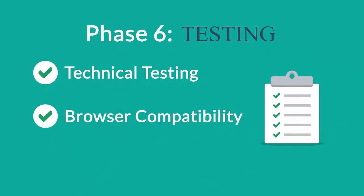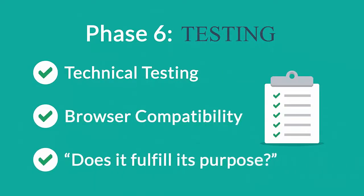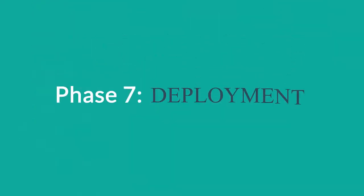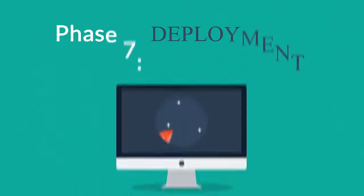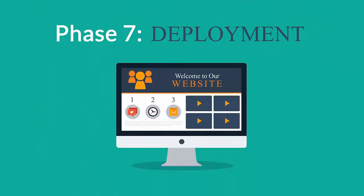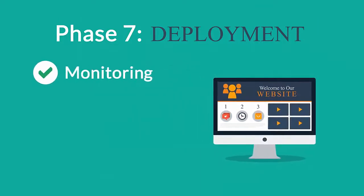Phase 6 — Testing: we test all the technical features like code and scripts, compatibility with major browsers, but also we ask ourselves if the website really fulfills its purpose. Phase 7 — Deployment: after we launch the site, our job is definitely not done yet. We always monitor what's happening after the start, enabling us to fix any possible deficiencies.